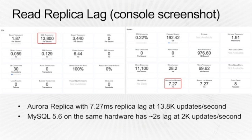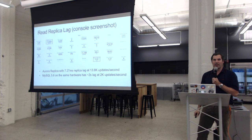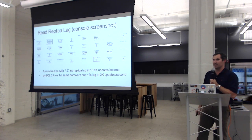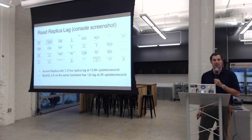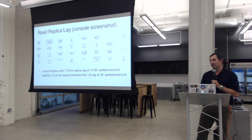Replica lag is also impressive. With 13,800 inserts per second we saw 7.2 milliseconds of replica lag — almost instantaneous. The same hardware running MySQL 5.6 with 2,000 updates per second was seeing replica lag around two seconds. With Aurora, your read replicas are essentially in sync with your master within 10 milliseconds.